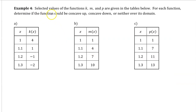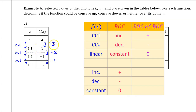Example 4. Selected values of the functions k, m, and p are given in the tables below. For each function, determine if the function could be concave up, concave down, or neither over its domain. For part a, here are the changes in output and the changes in input. We need to determine whether the rate of change is increasing or decreasing so we can determine if the function is concave up or concave down.